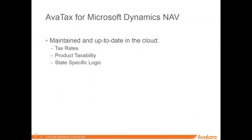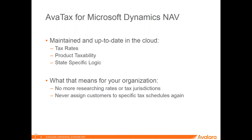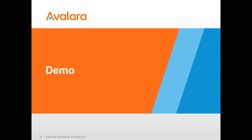For AvaTax for Dynamics NAV, it maintains an up-to-date cloud database, so there are no updates you have to do. All the tax rates are there, all the product taxability is there — you would just map your products to our product taxability. And then we have the state-specific logic. So what does this mean for you? No more researching tax rates, no more trying to find what the rates are, no more making sure you catch rate changes when those come down from legislation. And you don't have to worry about assigning tax codes to customers — we're going to take care of that at the address level, finding that rooftop location.